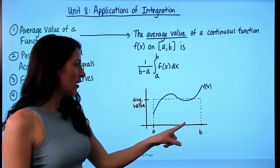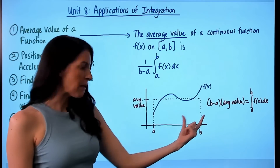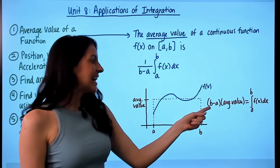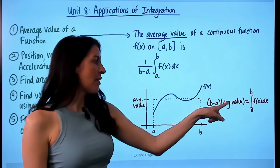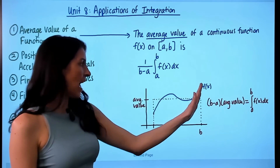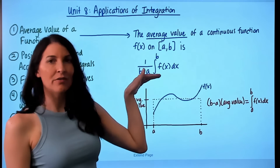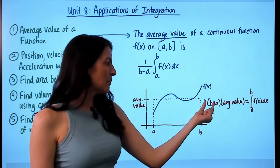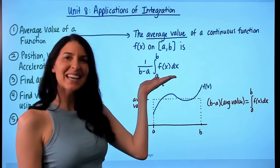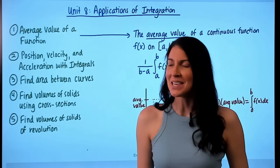If you found the area of this rectangle, the base would be (b minus a) and the height would be the average value — a rectangle where that area equals the area under the f(x) curve from a to b. You can arrive at the average value formula by simply dividing by (b minus a). That's one thing you're sure to be asked about on the AP exam.